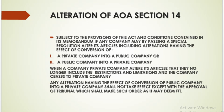For altering the article of association under Section 14, the company has to basically check the provisions which are contained in the memorandum. Then it can alter the article of association as per the provisions of this act and the conditions mentioned in the memorandum. The company then has to pass a special resolution to alter its articles, including alterations having the effect of conversion of a private company into a public company or a public limited company into a private company.